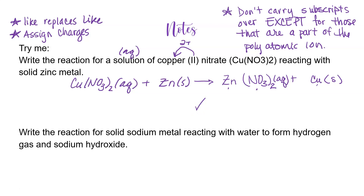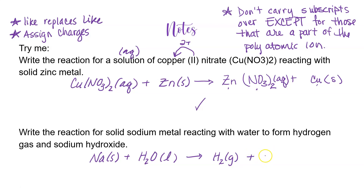Next example: write the reaction for solid sodium metal, Na(s), reacting with liquid water, H2O(l), to produce hydrogen gas, H2(g), and sodium hydroxide, NaOH. Sodium is Na with a 1+ charge. Hydroxide is OH with a 1− charge. They are equal and opposite, so they cancel out and we do not need to trade. The state of matter for sodium hydroxide is not given, so we can leave it off.